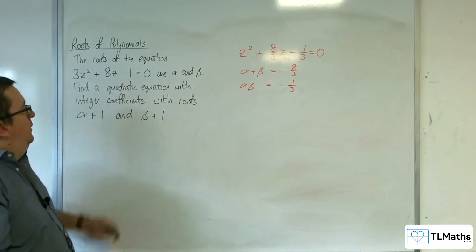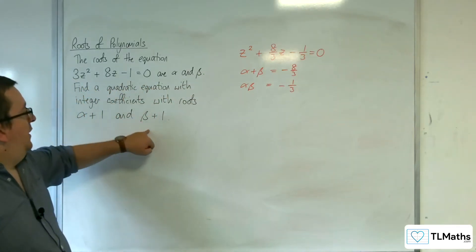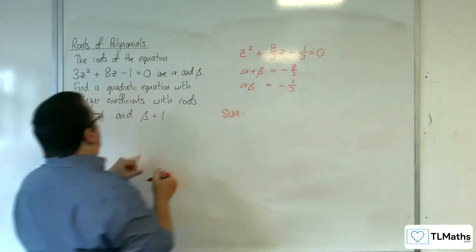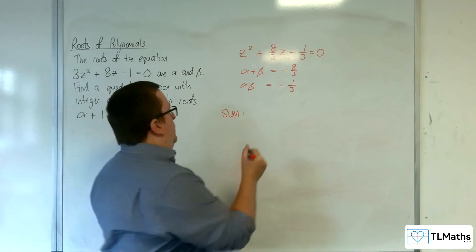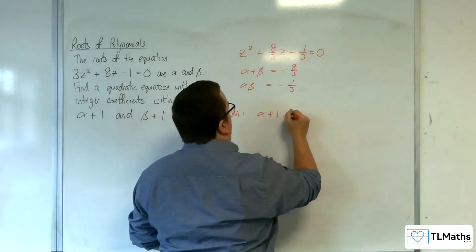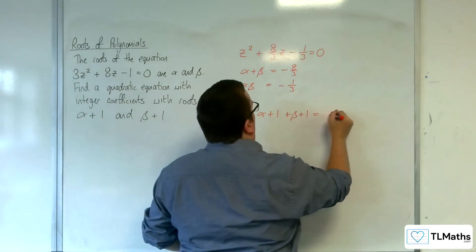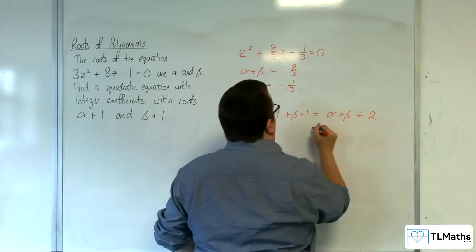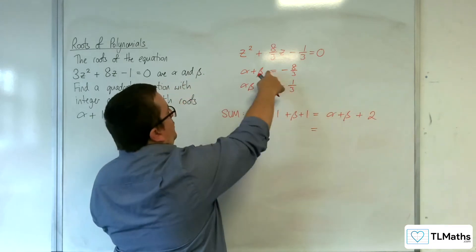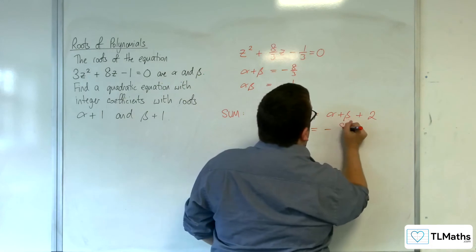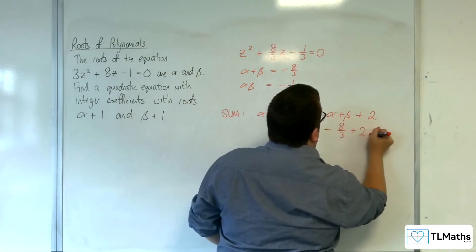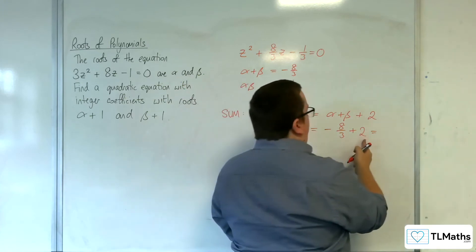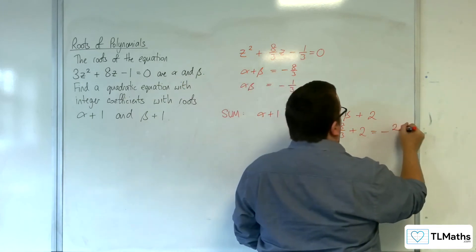So the new sum of the roots is alpha plus 1 plus beta plus 1, which is alpha plus beta plus 2. So with the alpha plus beta we had before: minus 8 thirds plus 2. Since 2 is 6 thirds, that gives minus 2 thirds.